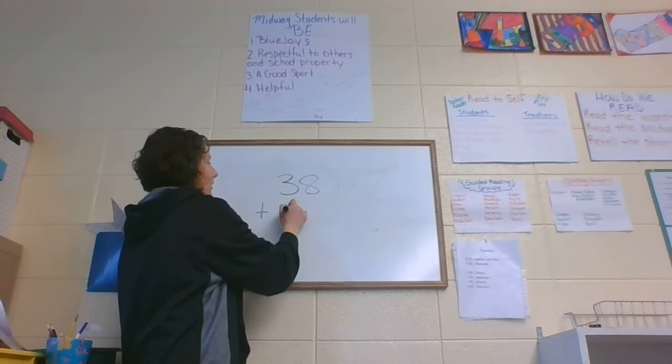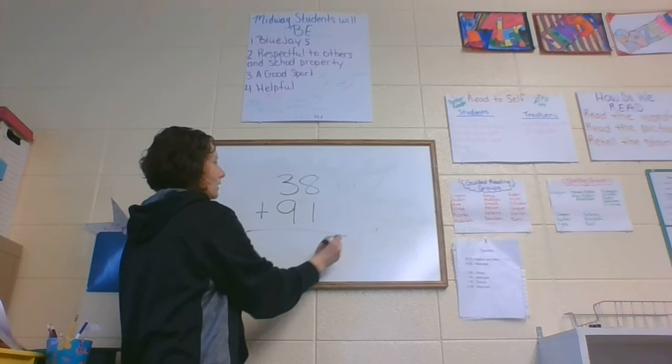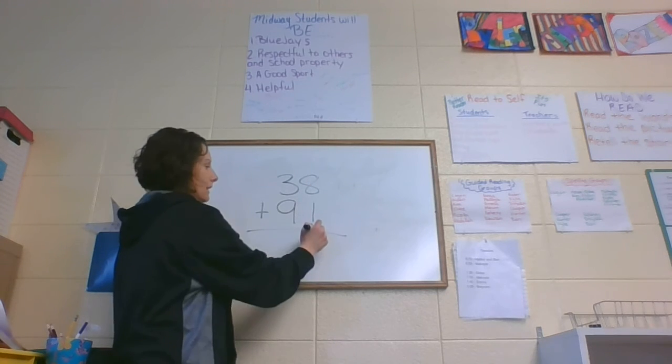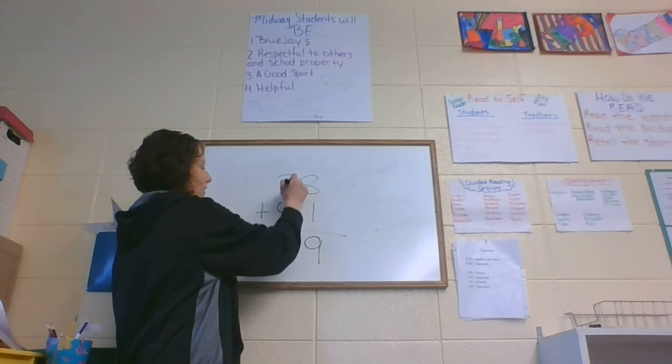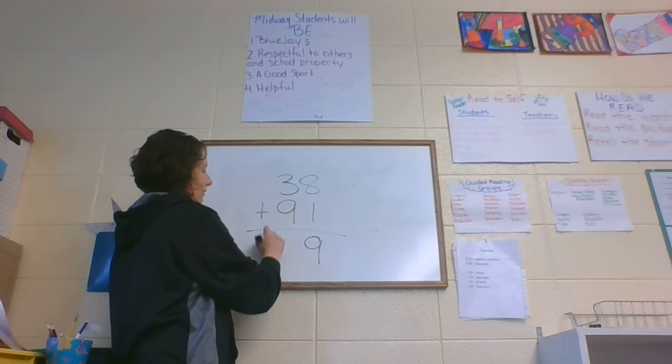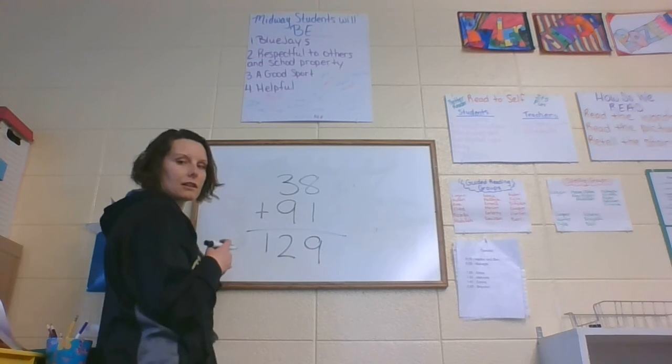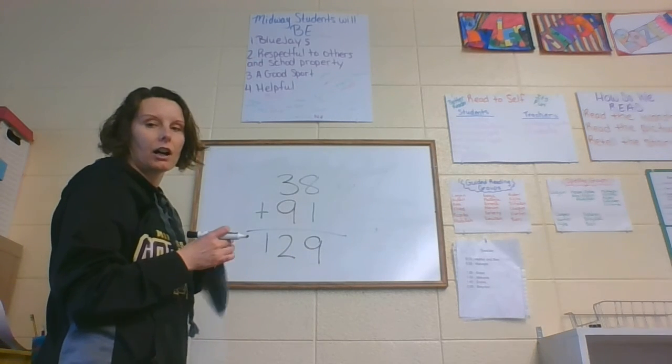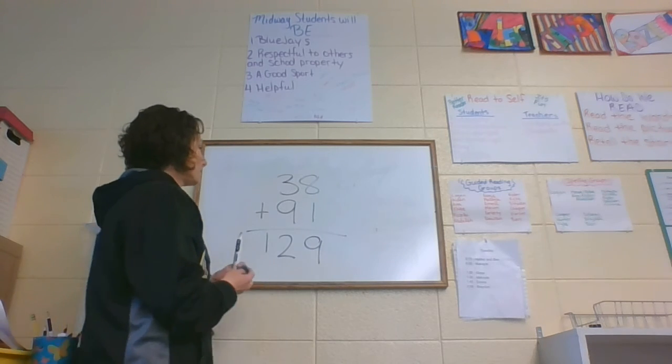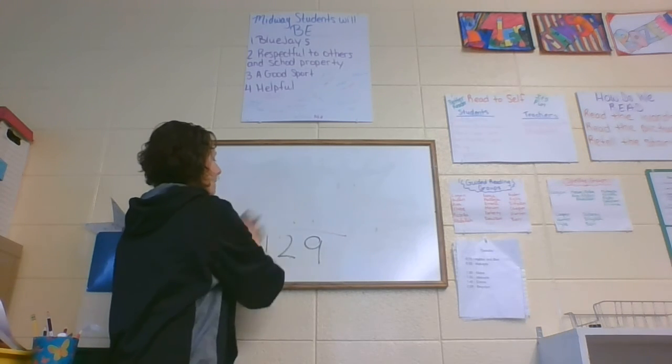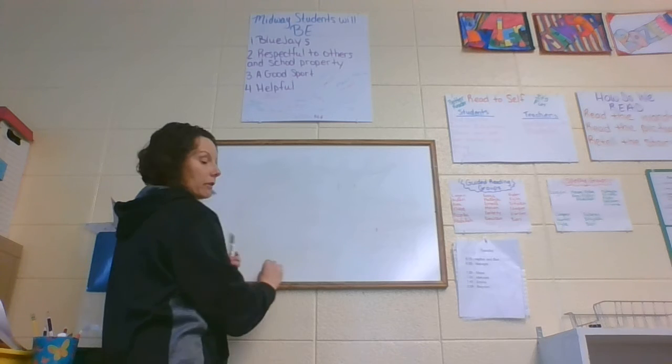Now we're moving on to addition. 38 plus 91. 8 plus 1 is 9. 3 plus 9 is 12. So I would just write the 12. And you have 129.